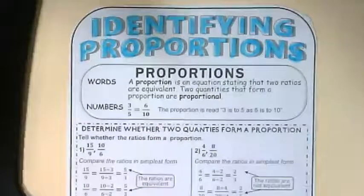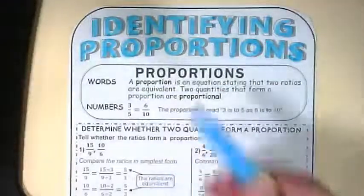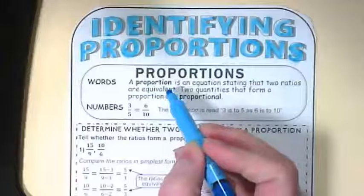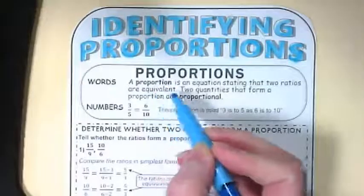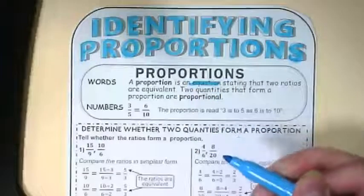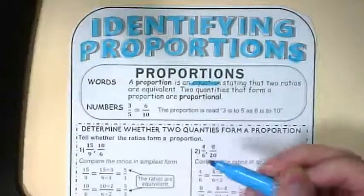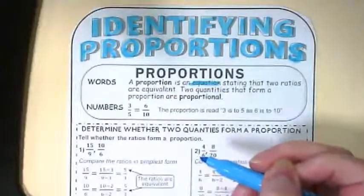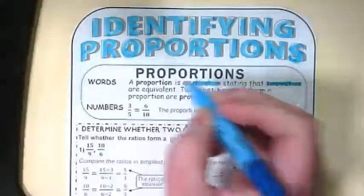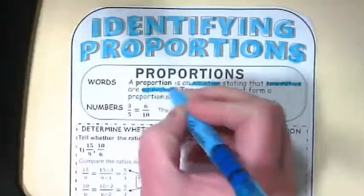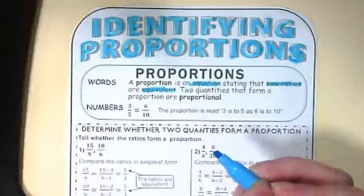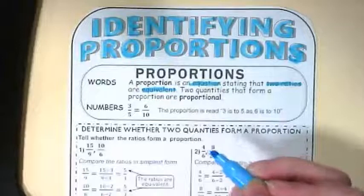We're going to read through the definition. In order to identify proportions, we have to know what proportions are. A proportion is an equation. I want you to highlight that word. A proportion is an equation stating that two ratios are equivalent.